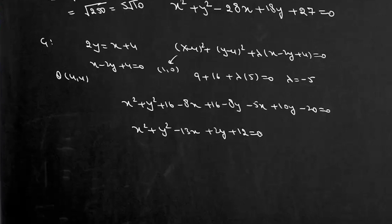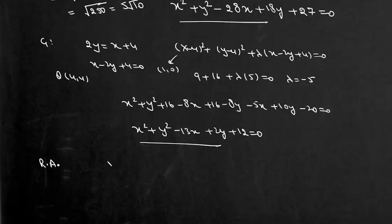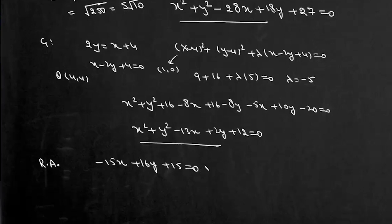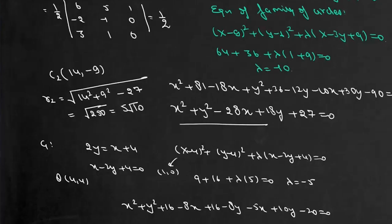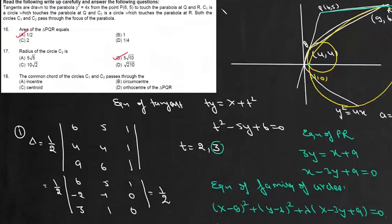Once we have both circle equations, we find the common chord as their radical axis by subtracting: (−28 + 13)x + (18 − 2)y + (27 − 12) = 0, giving -15x + 16y + 15 = 0. So the equation of the common chord is -15x + 16y + 15 = 0.